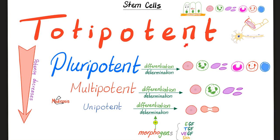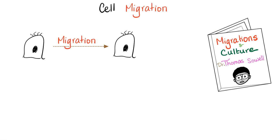Stem cells are totipotent, pluripotent, multipotent, or unipotent. My favorite author, Dr. Thomas Sowell, has a great book called Migrations and Culture, talking about immigration patterns and different peoples. But when I first read the title, the first thing that came to my mind is cell migration, and when I read culture, I thought of microbiology culture — some petri dish and stuff. Studying medicine so much has ruined my life.